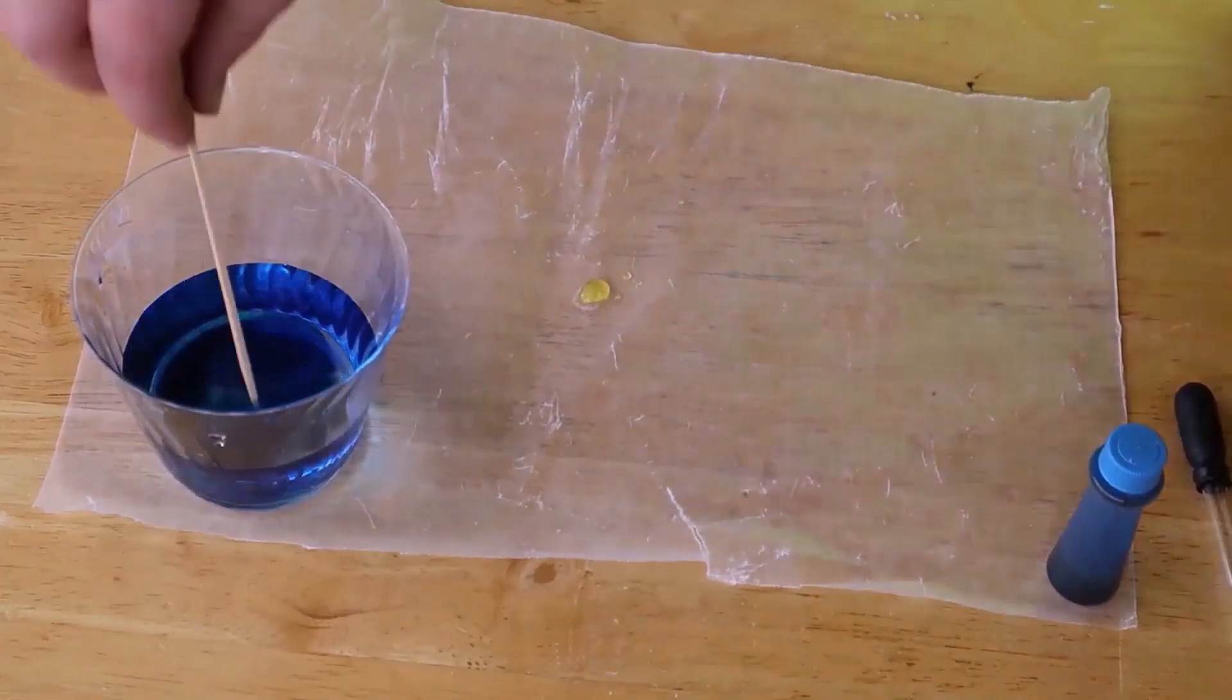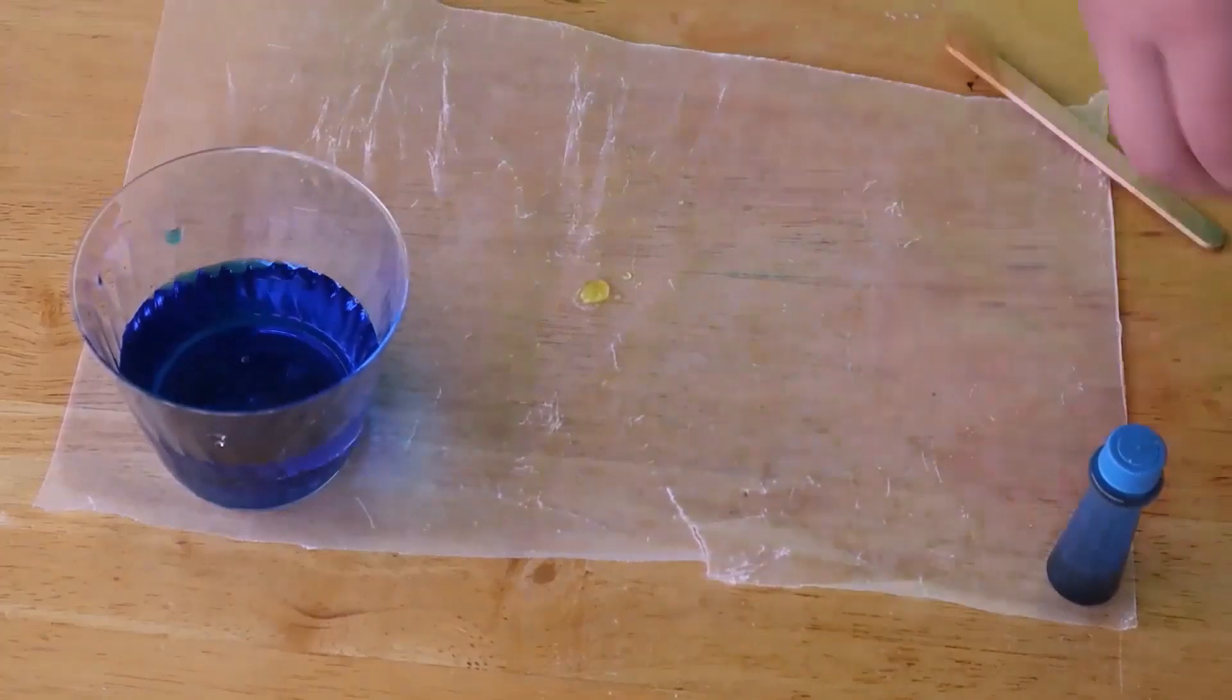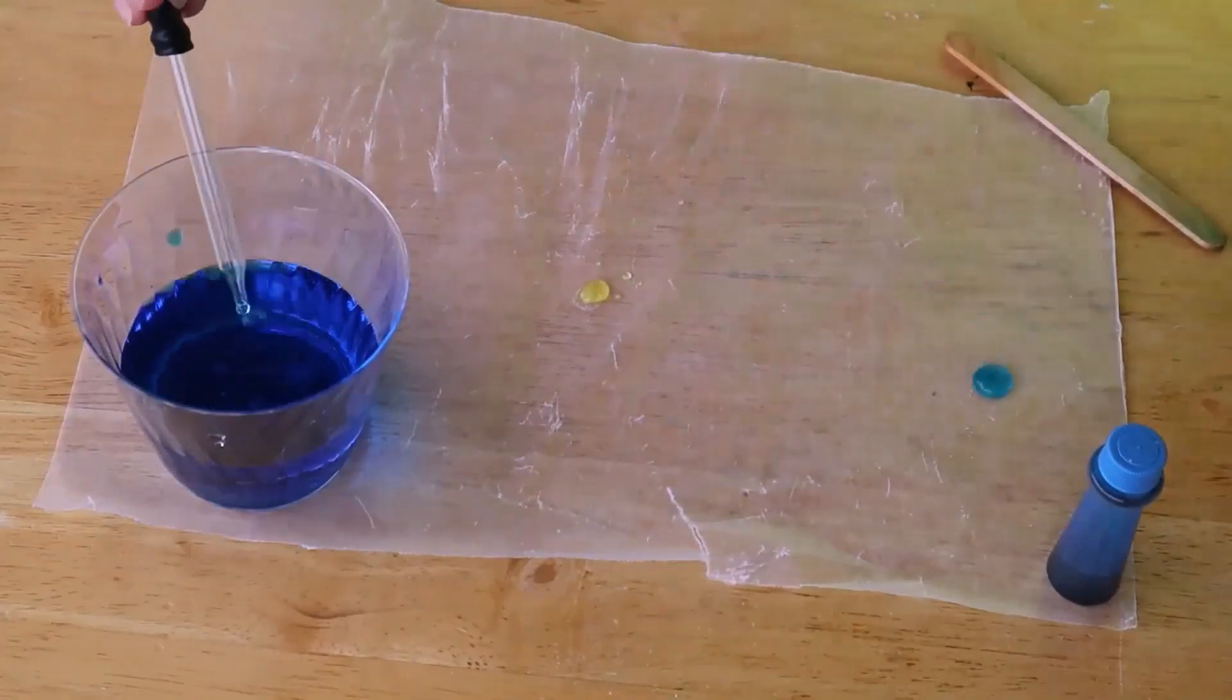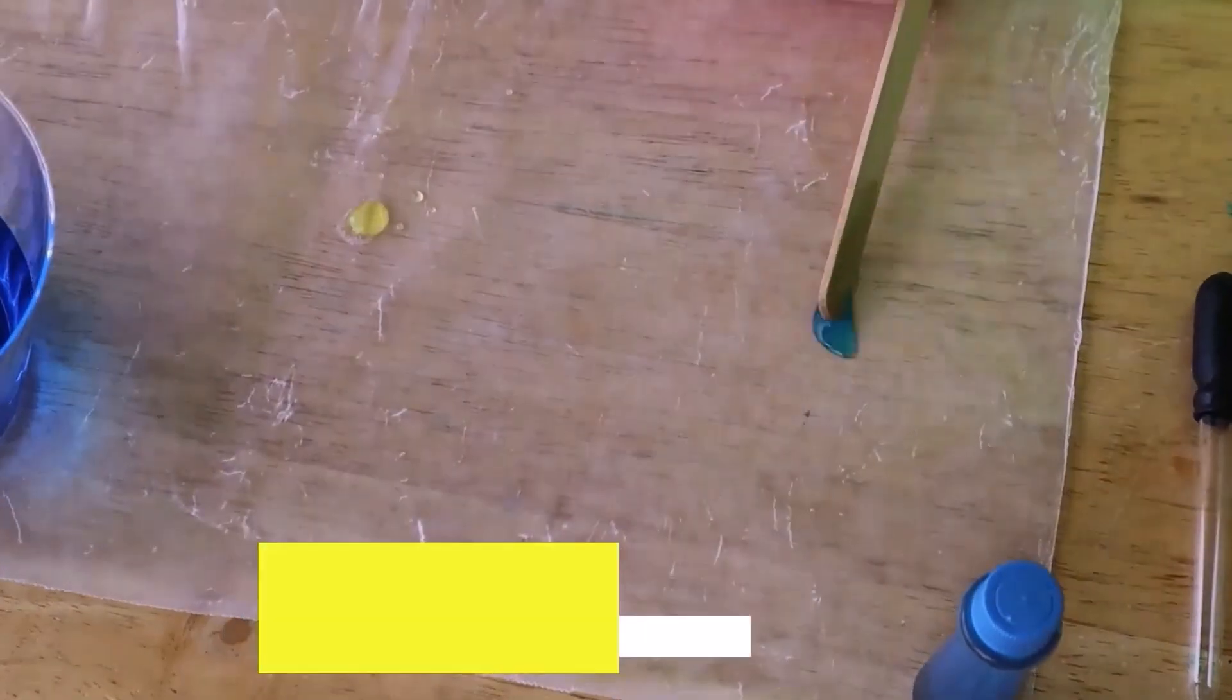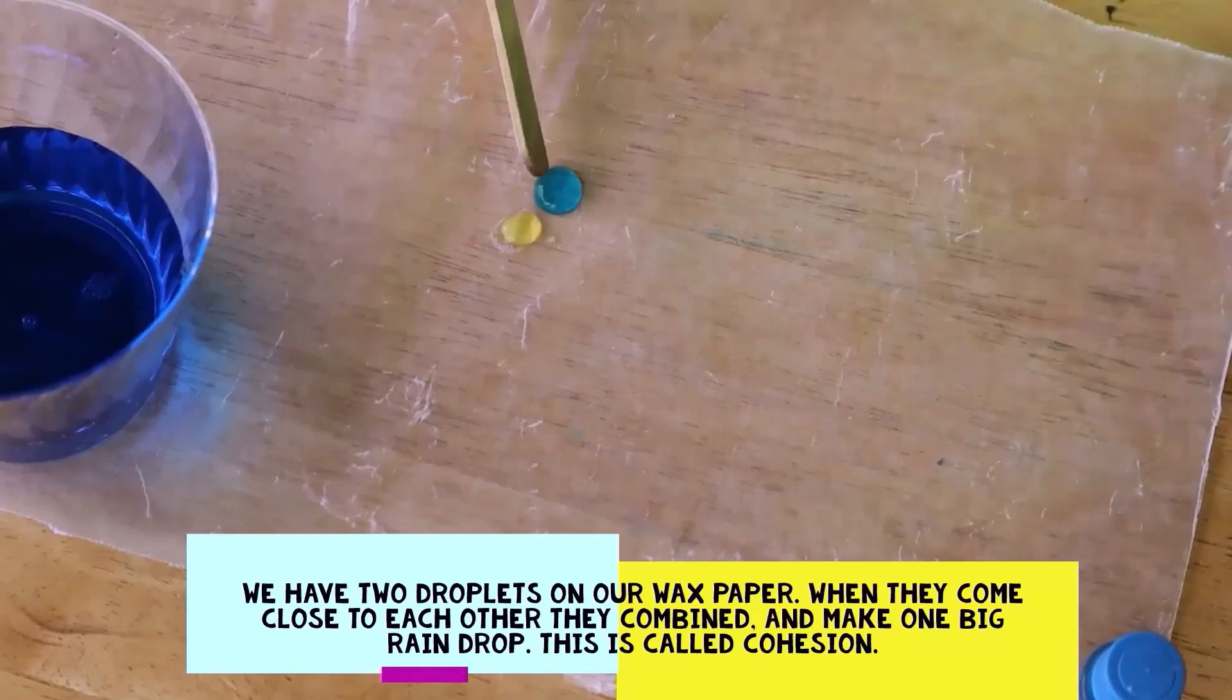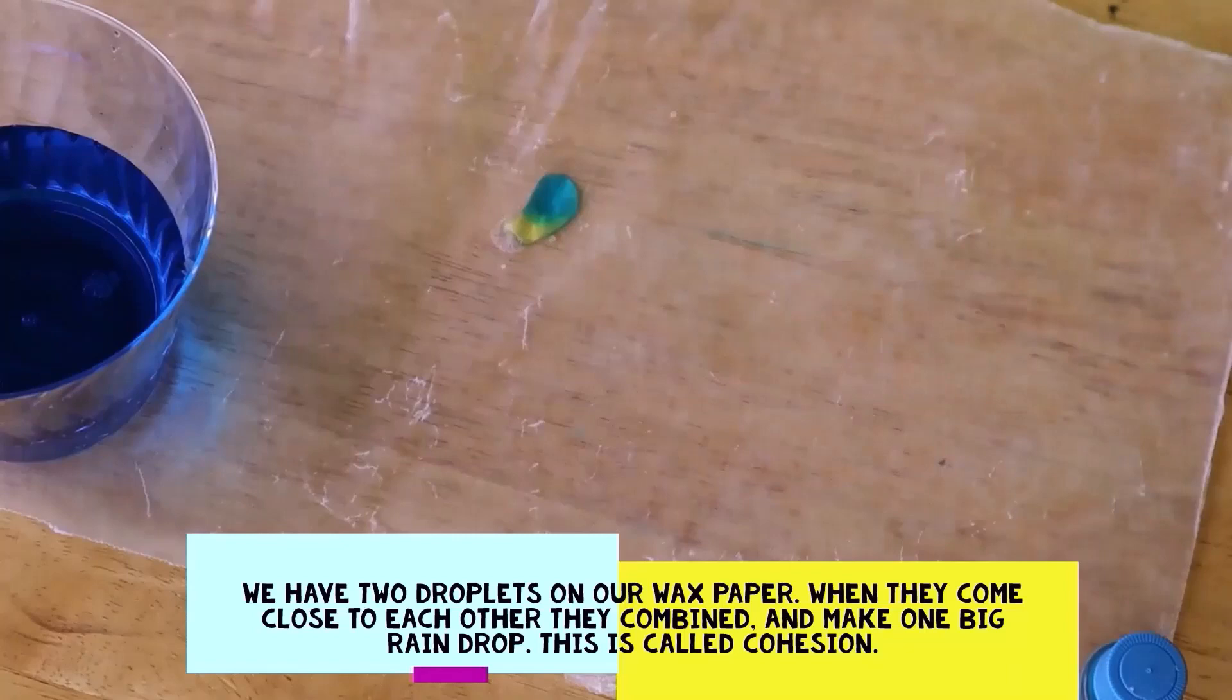We repeat this process using blue food coloring this time. I instruct the students to place the blue droplet away from the yellow droplet. Then they can move the droplets closer and closer to each other. When they touch each other, they combine and change colors.